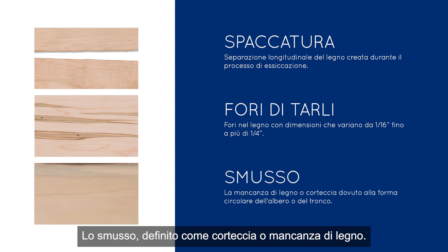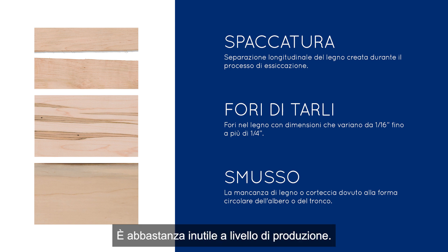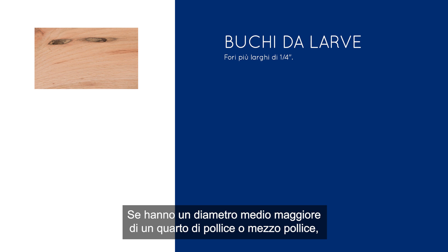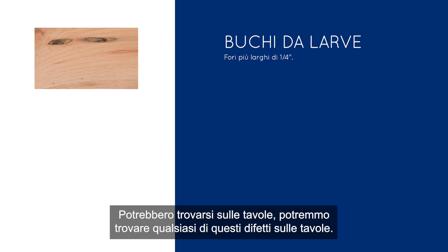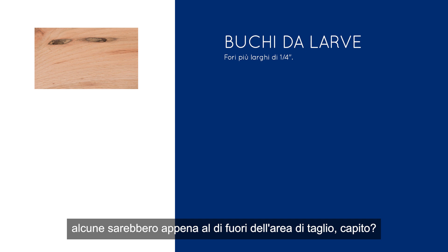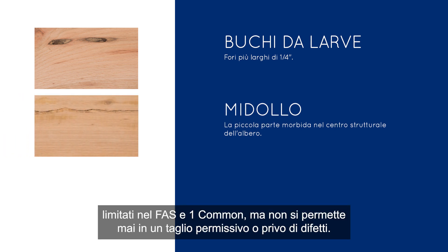Wane — it's bark or lack of wood, that's the definition. That's this little bit across the top where the bark used to be. That's never allowed in a clear or sound cutting; it's really pretty much useless for production. Grubholes are really large worm holes. If they're larger in average diameter than a quarter inch or half inch, they're considered unsound and wouldn't be in a sound cutting — could be on the board though. Pith — that first couple of annual rings of growth — is limited on FAS and one common, but never allowed in a cutting, clear or sound.